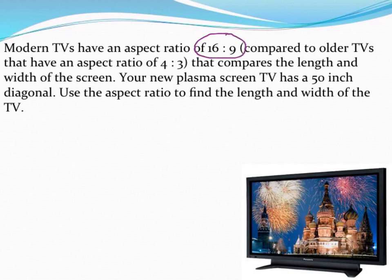TVs nowadays have an aspect ratio of 16 to 9, meaning the length of a TV and its width are in a ratio of 16 to 9. This is compared to the older TVs, the blockier TVs, that are in a ratio of 4 to 3, meaning they were more close to being a square than these new televisions are.